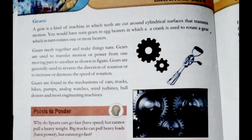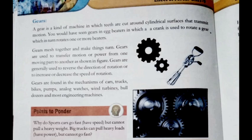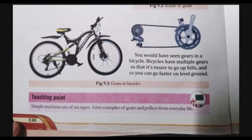That is very much important. Because of the gear change, the speed increases and decreases. Gears are used in the mechanisms of car, truck, bikes, pump. In every one thing, the gears are used. Analog watch, wind turbines, bulldozers and most engineering machines. Is that clear? We use gears. We use gears. Most of the clock also often.